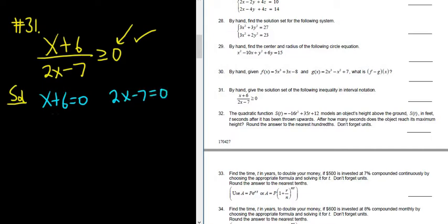Then you solve each of these for x. So here we just subtract 6, so we get x equals negative 6. Here we add the 7, so we get 2x equals 7, and then we divide by 2, so we get x equals 7 halves.